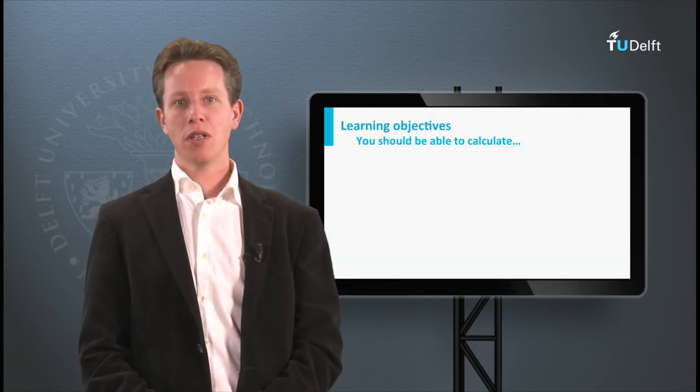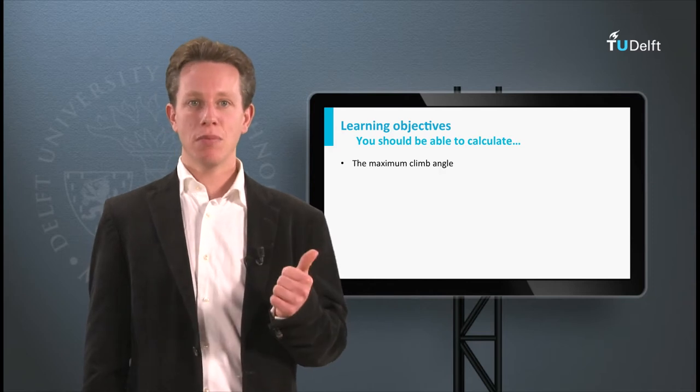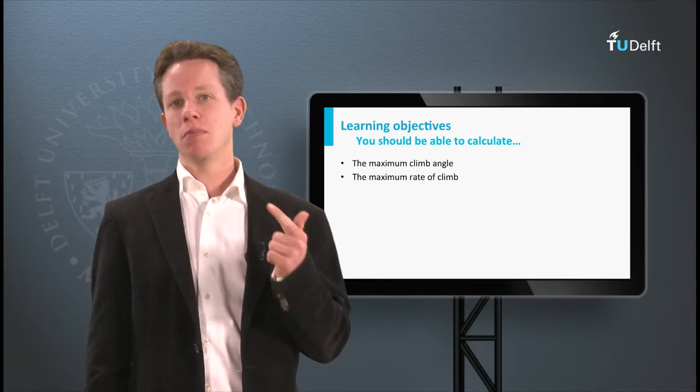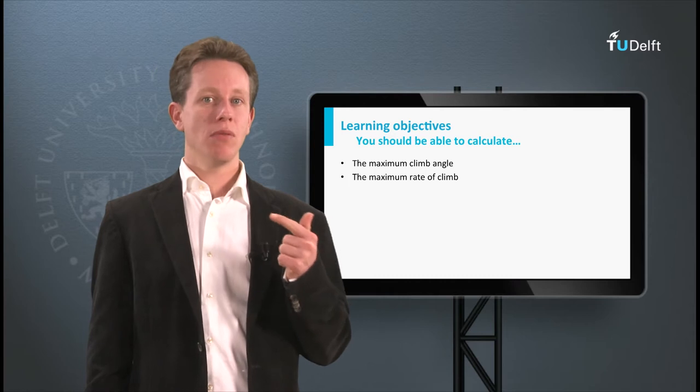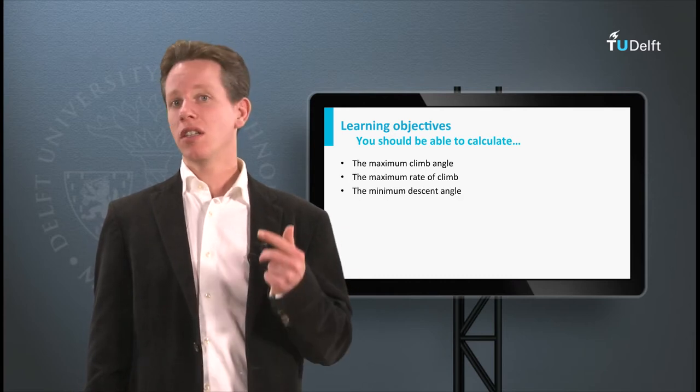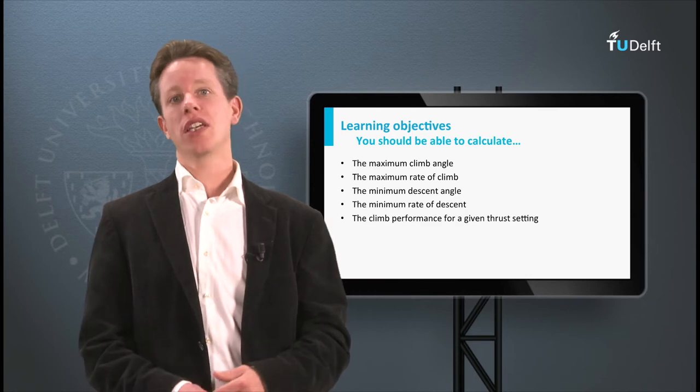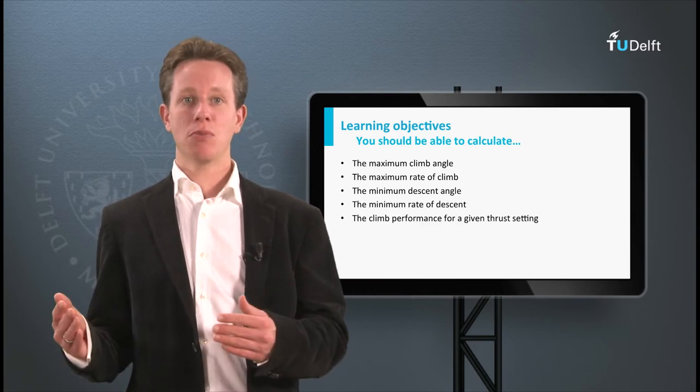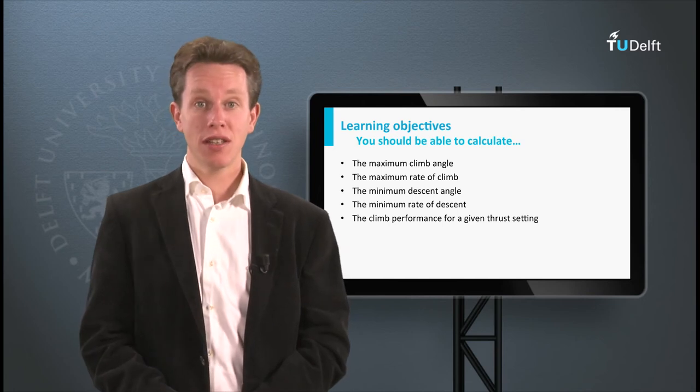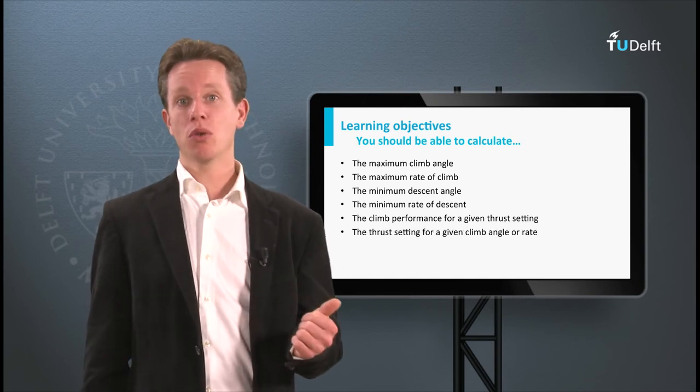To be more specific, you should be able to calculate the maximum climb angle, the maximum rate of climb, the minimum descent angle, the minimum rate of descent, and also the climb performance for a given thrust setting, so anywhere between maximum and minimum, and the thrust setting for a given climb angle or rate.